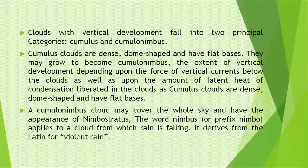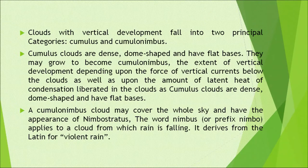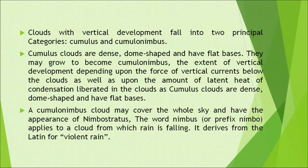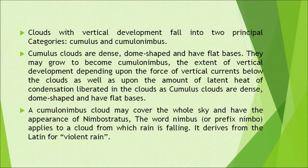Clouds with vertical development fall into two principal categories: cumulus and cumulonimbus. Cumulus clouds are dense, dome-shaped, and have flat bases. They may grow to become cumulonimbus, with the extent of vertical development depending upon the force of vertical currents below the clouds as well as the amount of latent heat of condensation liberated. A cumulonimbus cloud may cover the whole sky and have the appearance of nimbostratus. The word 'nimbus' or prefix 'nimbo' applies to a cloud from which rain is falling, derived from the Latin for violent rain.